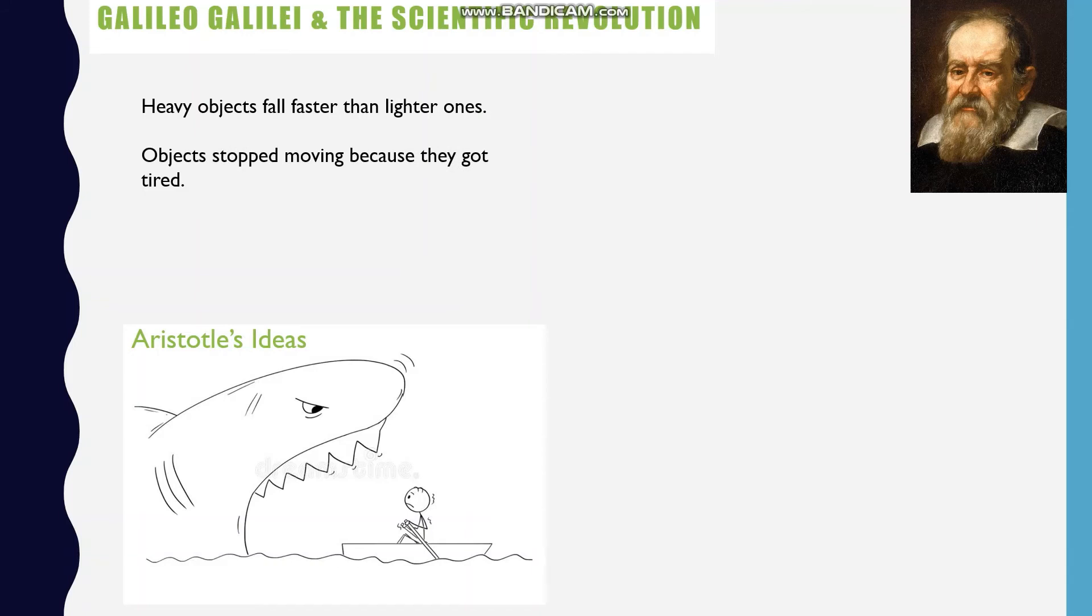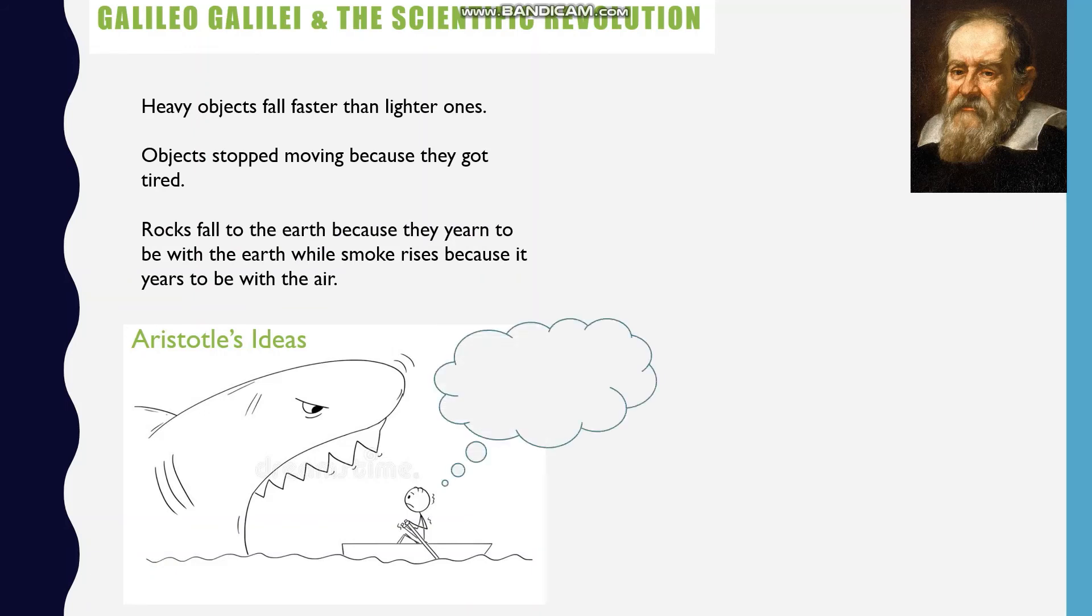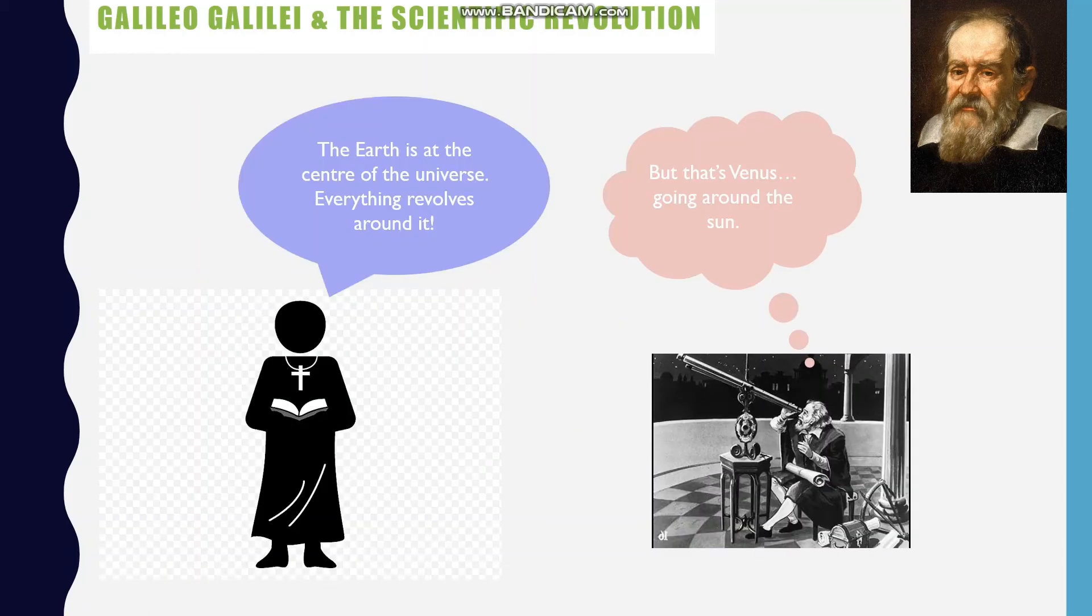Against such a background, still unreceptive to experimental methods, we find Galileo experimenting with pendulums, with moving bodies, with air thermometers, as well as with mirrors and lights. Galileo's methodology, rather than relying primarily on intellectual propositions and assumptions, employed experimentation to achieve insights into nature.